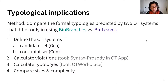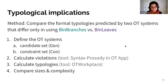We hypothesize that systems with bin-max-branches plus match will give simpler typologies than systems with bin-leaves and match, because with branch counting there is less constraint conflict. The method is to compare the formal typologies predicted by two OT systems differing only in using bin-branches versus bin-leaves. We define the OT systems: the candidate set (gen) and constraint set (con). We calculate violations using the SPOT app and calculate typologies using OT Workplace, then compare their sizes and complexity.